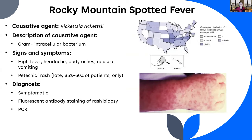Rocky Mountain Spotted Fever (RMSF) is caused by Rickettsia rickettsii, another gram-negative intracellular bacterium. Early signs and symptoms include high fever, headache, body aches, nausea, and vomiting. In 35–60% of patients, a petechial rash develops later. This disease must be caught early — if diagnosed early, treatment is usually effective, but if caught too late, RMSF can be fatal. Diagnosis is symptomatic, confirmed by fluorescence antibody staining of a rash biopsy or PCR.